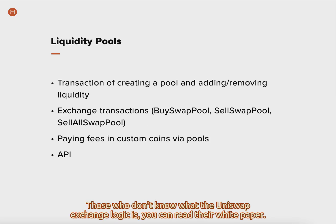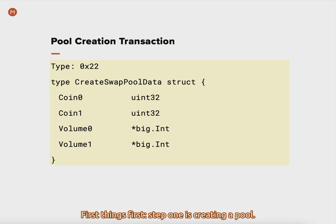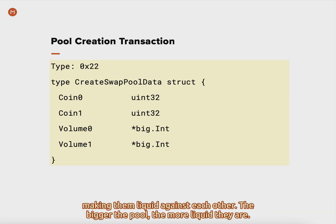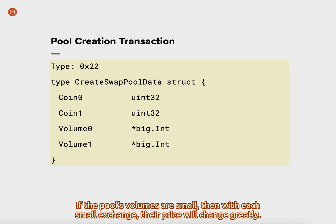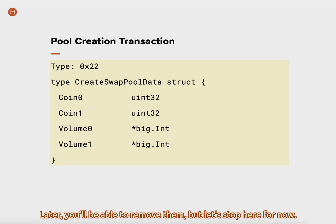Let's start with liquidity pools. For those who don't know what the Uniswap exchange logic is, you can read their white paper. In Minter, our logic is a bit different, which results in a smaller percentage on the exchanges inside the pool. Step one is creating a pool. Here we specify two coins that we want to create this pool for, and the volumes of these coins that we want to add into it, making them liquid against each other. The bigger the pool, the more liquid they are. If the pool's volumes are small, then with each small exchange, their price will change greatly. So you need to have these amounts in your wallet, because once the pool is created, they'll be withdrawn and locked into the pool. Later, you'll be able to remove them.